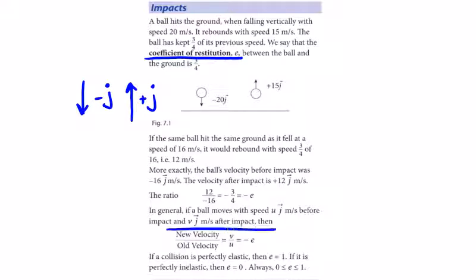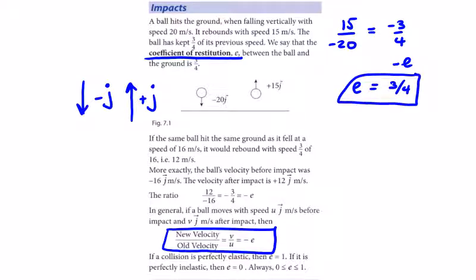The new velocity divided by the old velocity gives us minus e. So new velocity 15 divided by old velocity minus 20 gives us minus 3 over 4, so that's minus e. Therefore e equals 3 over 4, or it retains three quarters of its speed.